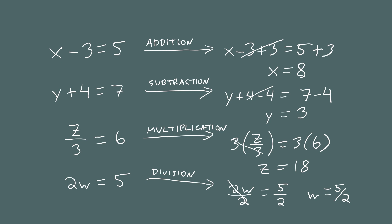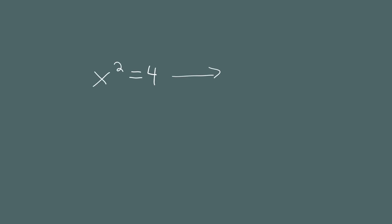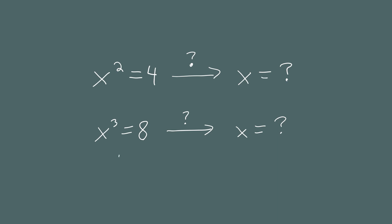But how do we undo more complicated expressions? Look at the equation x squared equals 4. What operation do we use to get x by itself? Or what about other exponents, like x to the third equals 8? Is there an operation that's the opposite of cubing, so that we can undo the cube to give us the answer? This is why you want to learn about roots and radicals — just as every operation has its opposite, when working with exponents you also need a way to undo that.